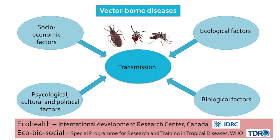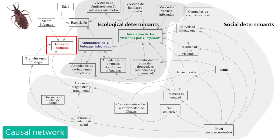These approaches treat diseases as complex systems where we must consider not only all the factors that play a role, but also their interactions. For my PhD dissertation, I worked on Chagas disease in northern Argentina. I built a causal network of all the determinants that play a role in human infection — displaying all relevant determinants and risk factors. On the outside we have social determinants, which are interrelated with each other and with the ecological determinants, and this whole relationship determines how people get infected.